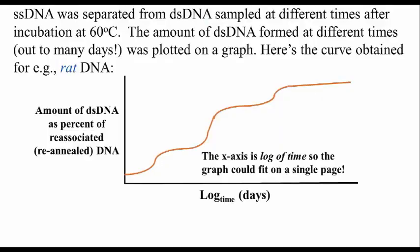Then the mixture was cooled to 60 degrees to allow separated strands to find and re-anneal to their complements. This curve shows the rate of re-formation of double-stranded DNA fragments at 60 degrees when this experiment was done with rat DNA extracts. Time on the x-axis is in log units, so the data actually taken over days or even weeks could fit on this graph. The data is multiphasic, as if there were three classes of rat DNA based on how rapidly each class could reform double strands after being denatured.